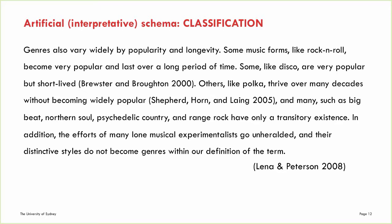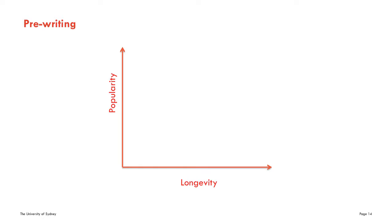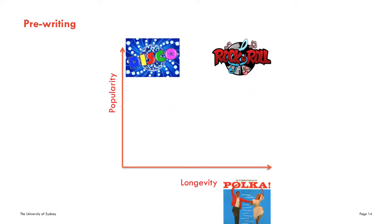Let's look at a short example from a literature review on music genres. Music genres could be classified according to the number and type of instruments used, their origin, or the themes touched on in the lyrics. But in this case, the writers are classifying these genres according to their popularity and longevity, as we can see from the topic sentence. They contrast how rock is still widely popular after many decades, while disco was rather short-lived. Before starting to type, the writers may have organized their ideas in a diagram with a y-axis for popularity and an x-axis for longevity, locating each genre in the plot area.